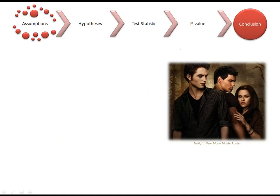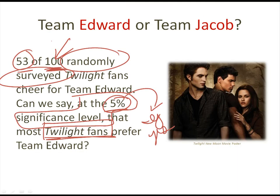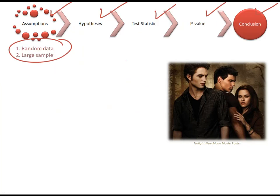We have five steps to performing any hypothesis test. We must check our assumptions, formulate our hypotheses, calculate our test statistic and p-values, and then formulate our conclusion. Our assumption when we're dealing with a test for proportions is that we have randomized data and a large sample size. When we go back to check the original problem, we see that we do have randomly surveyed data, and we have 100 people, so that is a pretty large sample size. So we've satisfied our two assumptions here.